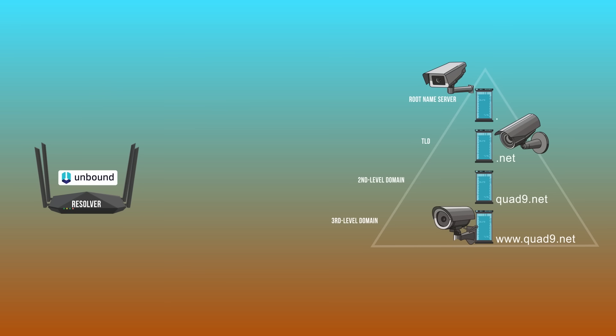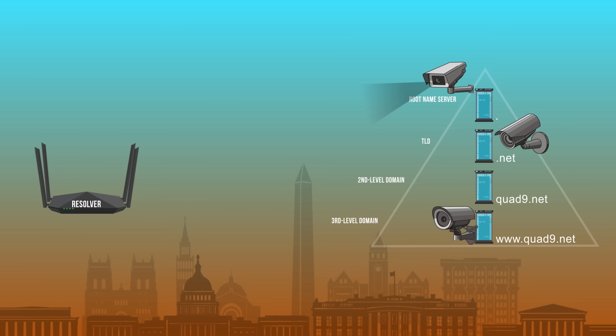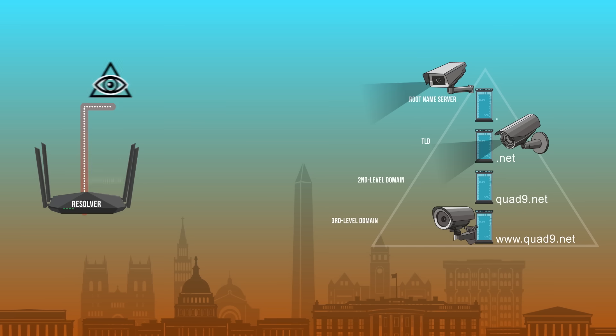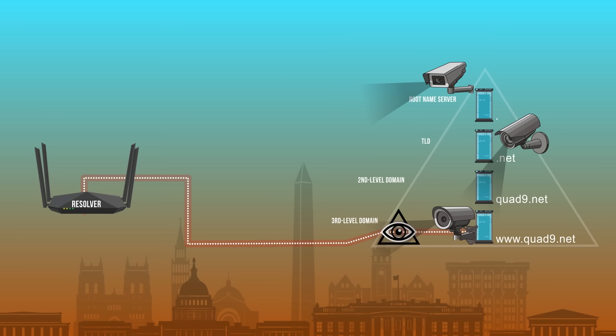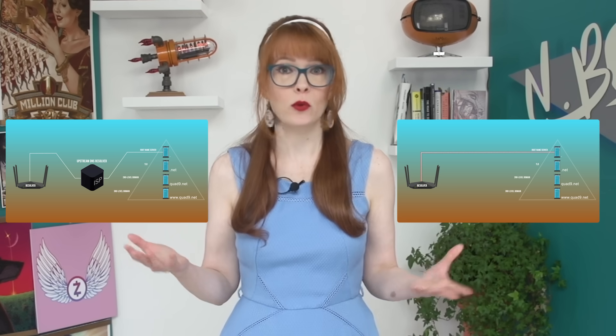But there are two big downsides to this. First, the authoritative servers you're sending requests directly to see who you are and what you're querying. Second, it's not possible to encrypt the connection from a request. So running your own resolver and sending your unencrypted DNS queries directly to authoritative servers doesn't stop your ISP or snooping governments from seeing your activity. But there is a solution.